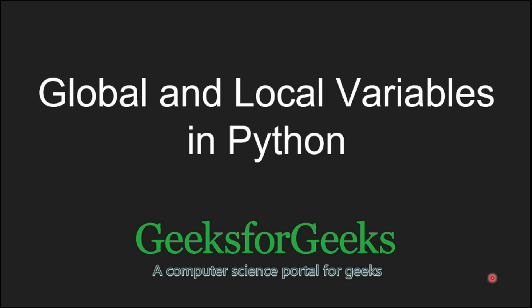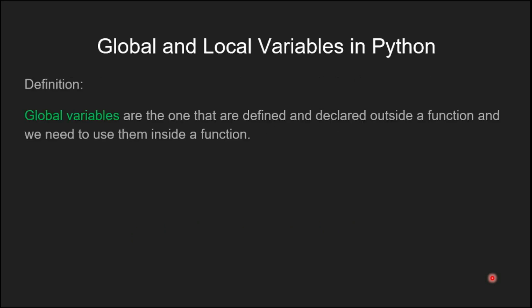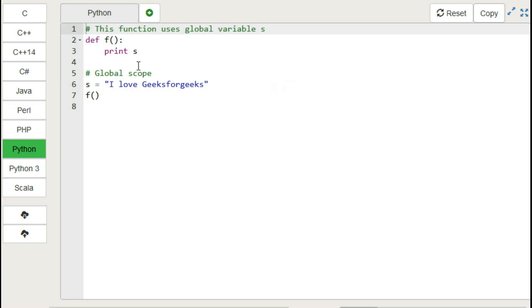Hi everyone, welcome to GeeksforGeeks. In this video I will discuss global and local variables in Python. Global variables are the ones that are defined and declared outside a function, and we need to use them inside a function. Let's clarify this with an example.